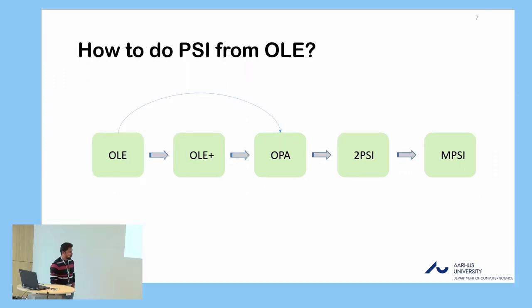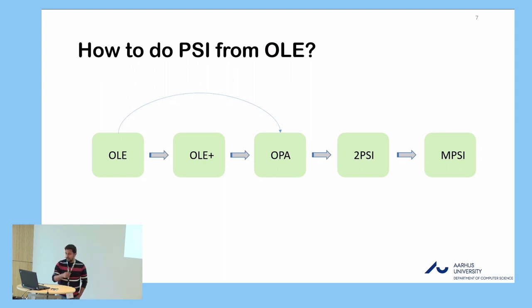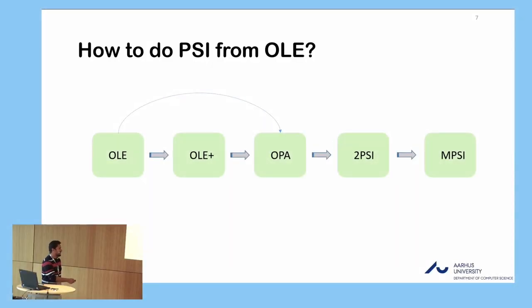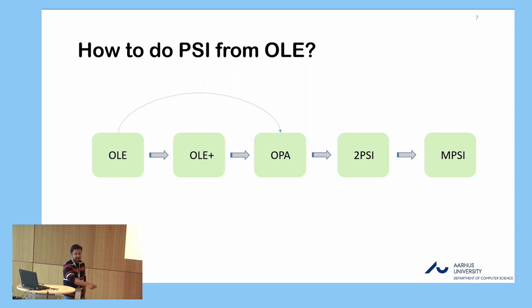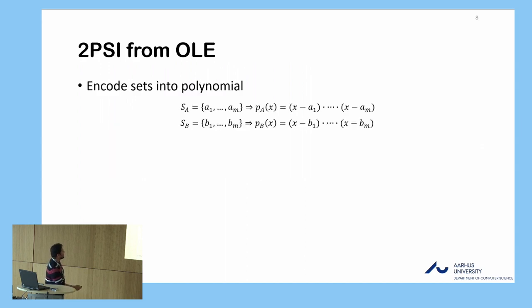How do we do PSI from OLE? From OLE, we define a restricted functionality called OLE+, which does not allow the receiver to input zero values. From that, we define a functionality called Oblivious Polynomial Addition (OPA). We define this OPA functionality, which takes two polynomials, randomizes them, and adds them. From OPA, we get our two-party PSI protocol, and from two-party PSI, we get the multi-party PSI protocol. Note that without active security, you can go directly from OLE to OPA to PSI and multi-party PSI.